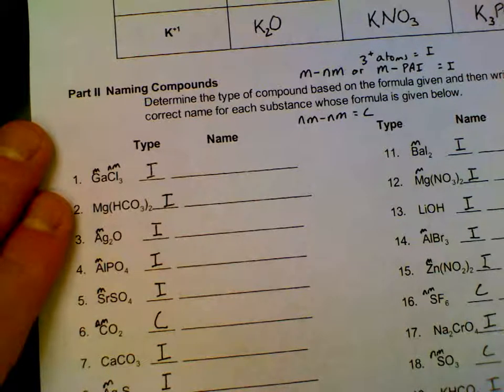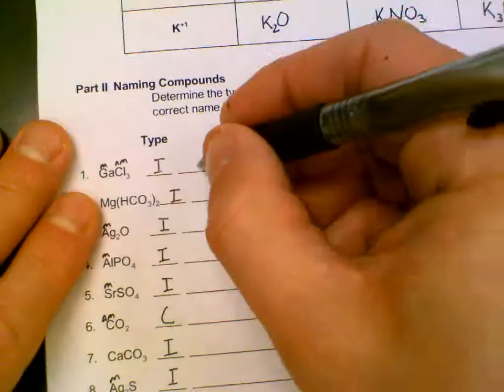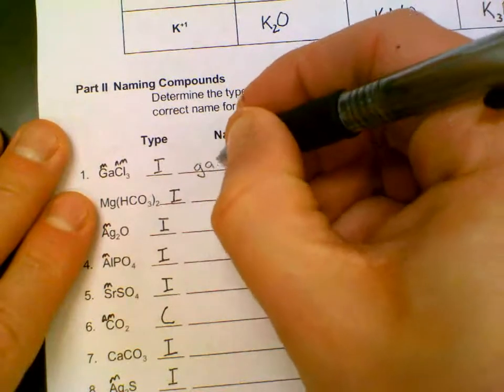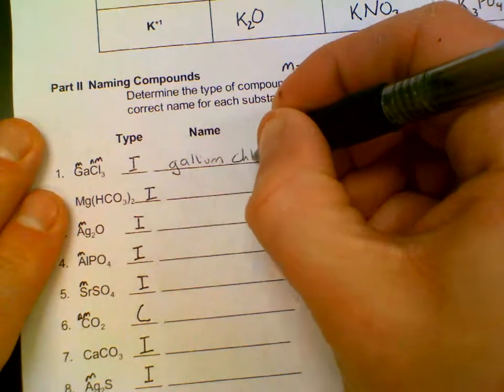For naming of these, recall that ionic, you just name the two ions. So Ga, since it's a metal, it gets its full name, gallium. Cl, since it's an anion, is called chloride.